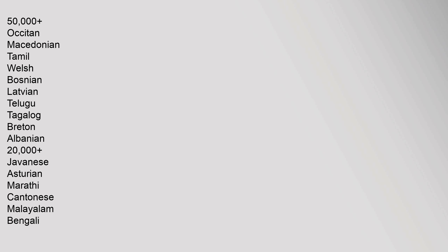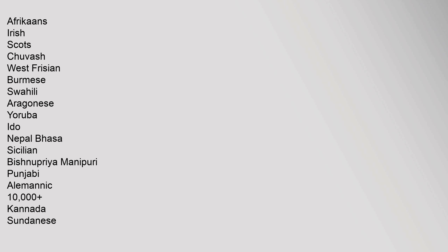Continued list: Indonesian, Romanian, Czech, Korean, Serbian, Malay, Turkish, Basque, Esperanto, Bulgarian, Minangkabau, Danish, Kazakh, Slovak, Armenian, Min Nan — 100,000; Hebrew, Lithuanian, Croatian, Chechen, Slovene, Estonian, Galician, Norwegian Nynorsk, Uzbek, Latin, Greek, Belarusian, Simple English, Volapük, Hindi, Thai, Azerbaijani, Urdu, Georgian — 50,000; Occitan, Macedonian, Tamil, Welsh, Bosnian, Latvian, Telugu, Tagalog, Breton, Albanian — 20,000; Javanese, Asturian, Marathi, Cantonese, Malayalam, Bengali, Afrikaans, Irish, Scots, Chuvash, West Frisian, Burmese, Swahili, Aragonese, Yoruba, Edo, Nepal Bhasa, Sicilian, Bishnupriya Manipuri, Punjabi, Alemannic — 10,000; Kannada, Sundanese, Mongolian, Egyptian Arabic, Yiddish, Odia, Ossetian, Sanskrit — 1,000; Northern Sami, Pashto, Dutch Low Saxon, Sindhi, Jamaican Creole, Crimean Tatar, Silesian, Assamese, Ripuarian, Konkani, Tulu, Wolof — 100; Zulu, Xhosa, Bambara, Venda, Cree.